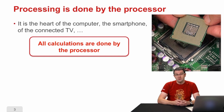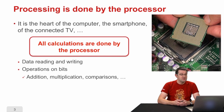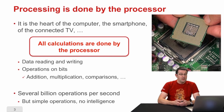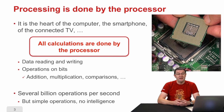What can the processor do? It can read and write data in the memory and also perform operations on it — operations on bits, on numbers, additions, multiplications, comparisons, etc. Modern processors can perform several billions of operations per second, but those operations are very simple: additions and multiplications, things like that. It is not intelligent. It will do very simple things, but it will do them very well and very fast.